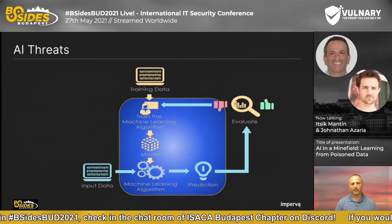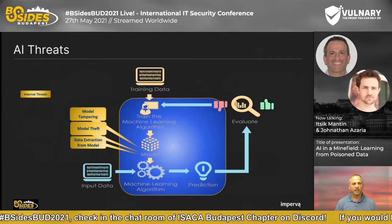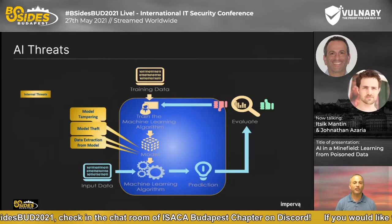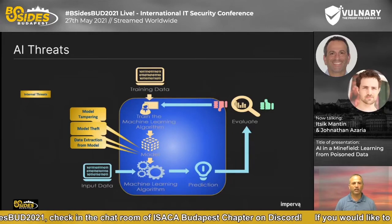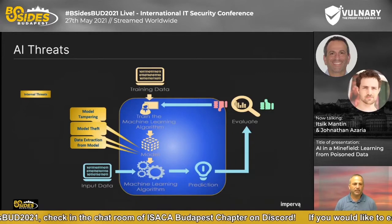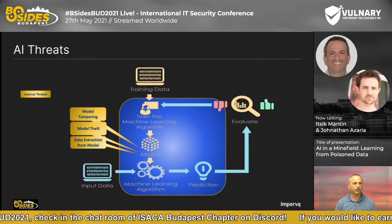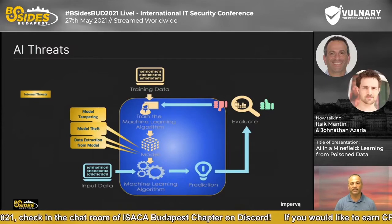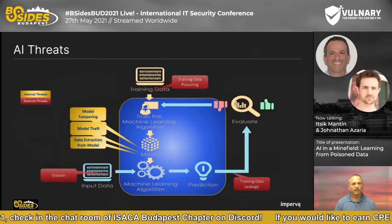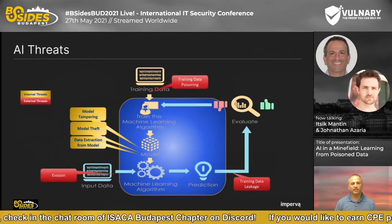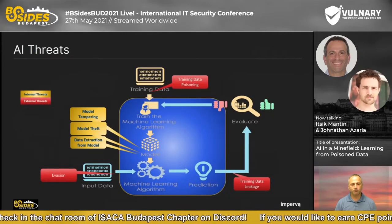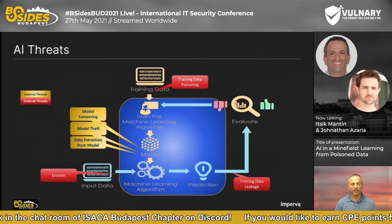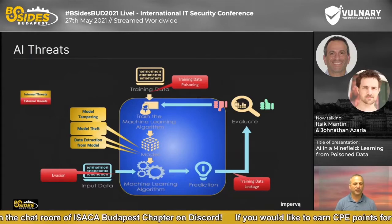Looking at this system from an attacker's perspective: if the attacker is an insider, or an outsider who gained access via phishing or malware, then the sky's the limit — he can steal or tamper the model, tamper every decision the model makes, steal or tamper the data. However, even when the attacker is not an insider, there are still pretty many things he can do. He can do model evasion, sometimes called deception or adversarial examples.